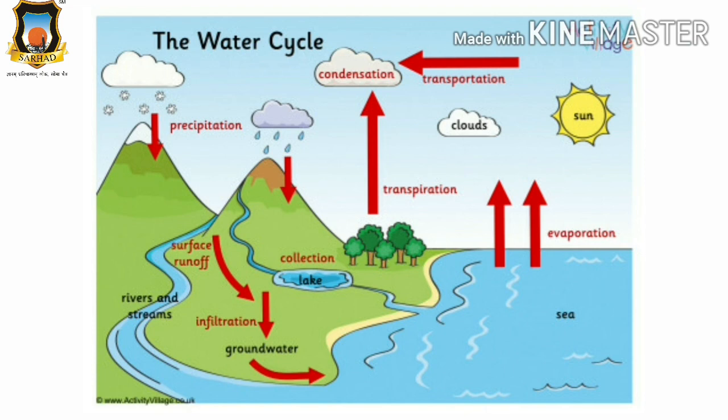Now water cycle and condensation. Sun rays fall on the water. Water becomes hot and vapors go high up in the sky to form a cloud. The clouds cool down and drops of water fall, which is called condensation. I hope children you know all the information. Very good. See you soon. Bye.